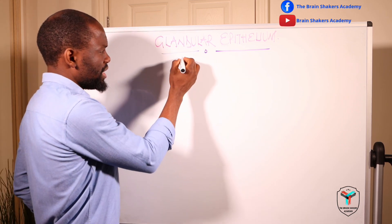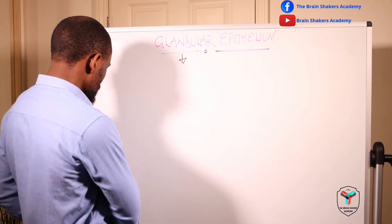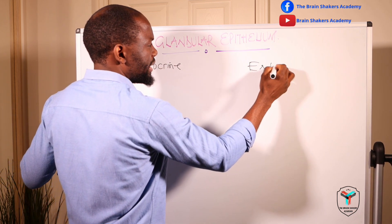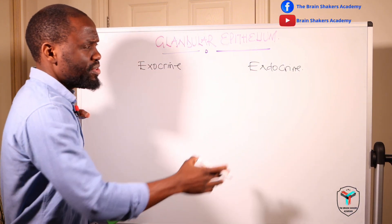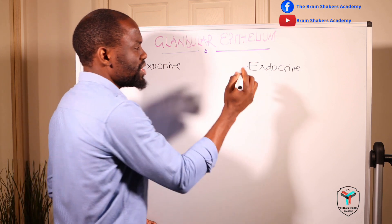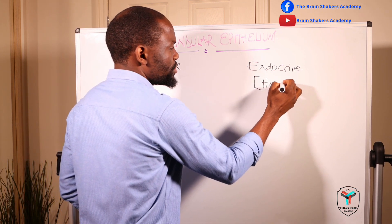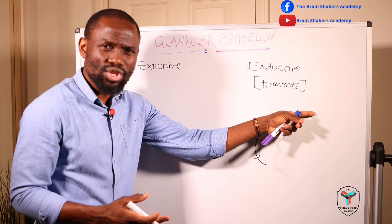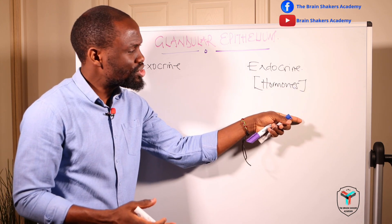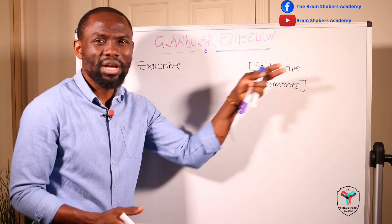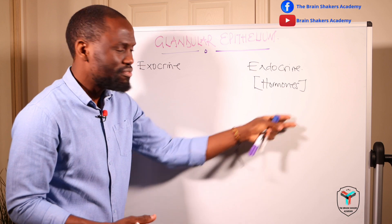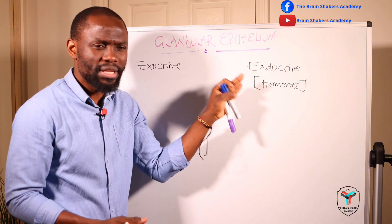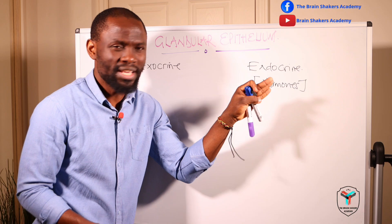When looking at glandular epithelium, we can break it down into two: exocrine glands or endocrine glands. Endocrine glands produce hormone elements, which get their way into the interstitial fluid, then diffuse into the bloodstream, and are transported to the target organs to bring about the homeostasis we see in all those physiological activities of the body. We will look at the endocrine glands in separate videos, as they are more complex.